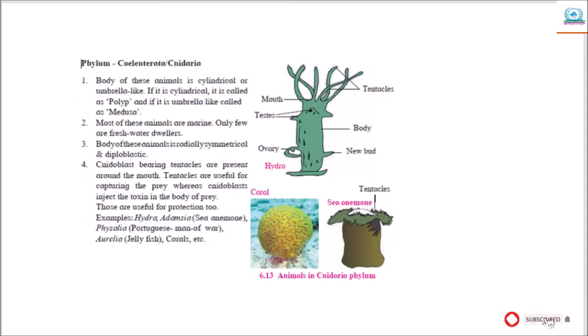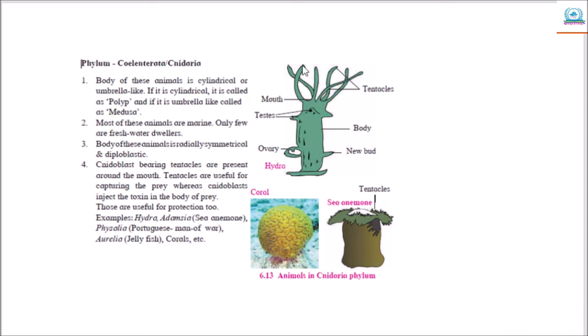The next phylum is Coelenterata or Cnidaria. The body of this animal is cylindrical or umbrella-like. If it is cylindrical, it is called a polyp. For example, Hydra — we can see their body is cylindrical in shape and is called a polyp.